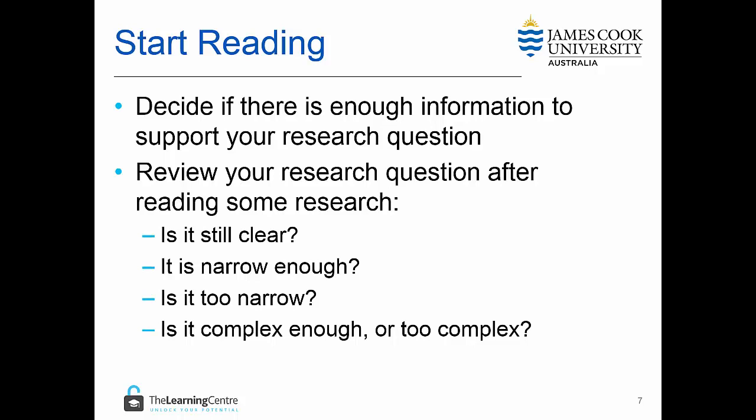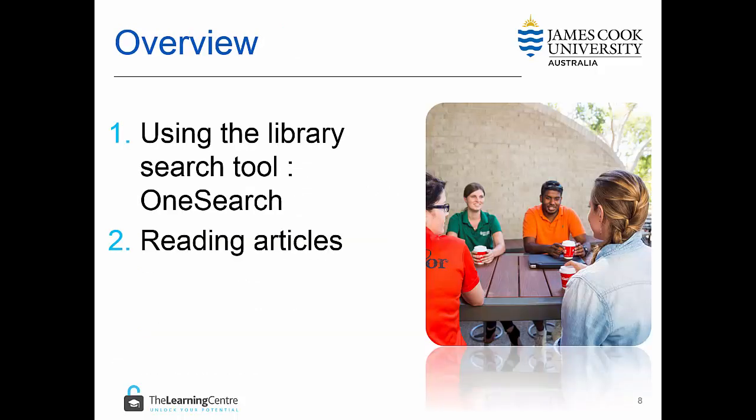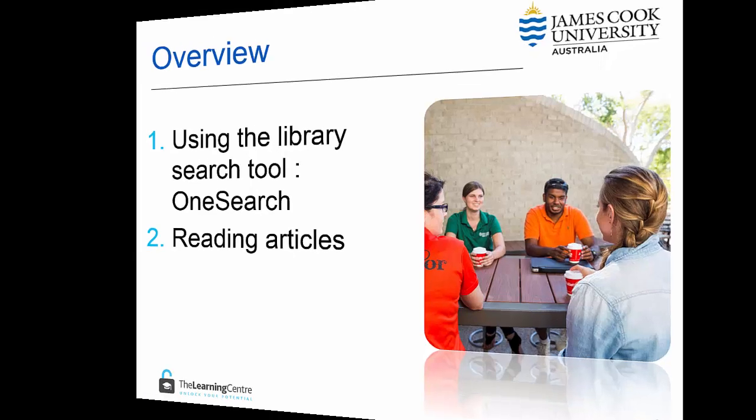You should also ask yourself the following four questions: Is it still clear? Is it narrow enough? Is it too narrow? Is it complex enough or too complex? If necessary you may need to modify your question. In this short video we have covered the library search tool OneSearch and how to do a pre-reading of articles.